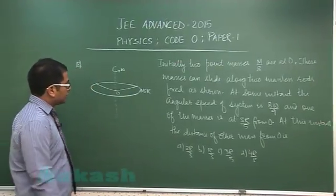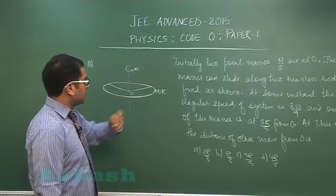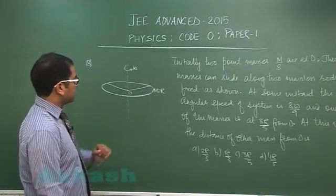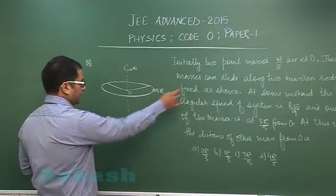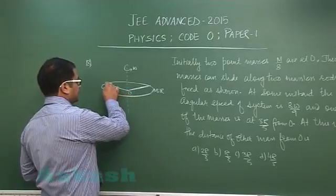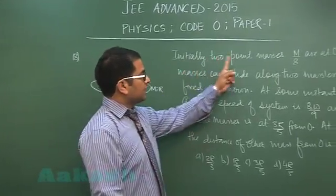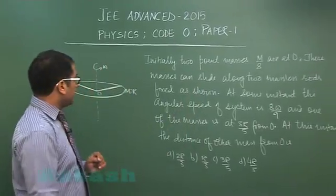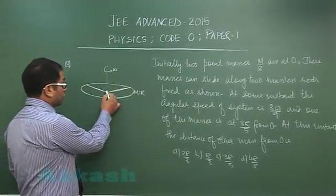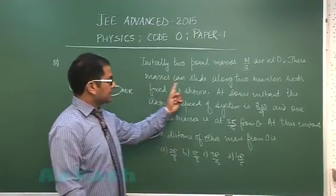Now we will go to question number 18. Question number 18 is from rotational dynamics, where a ring of mass m, radius r, is rotating with angular speed omega. There are two massless rods in the form of a chord, and initially two point masses m by 8 are at O. These masses can slide along two massless rods fixed as shown.